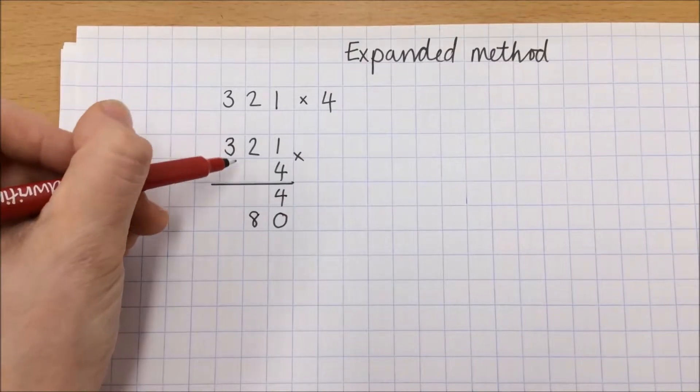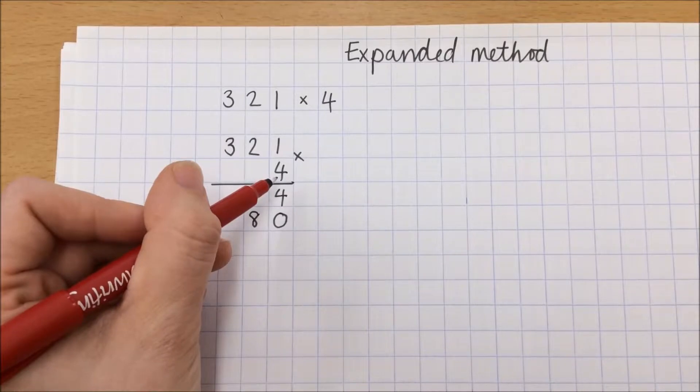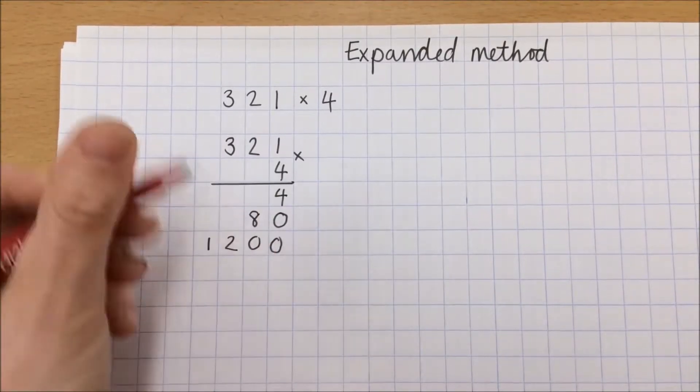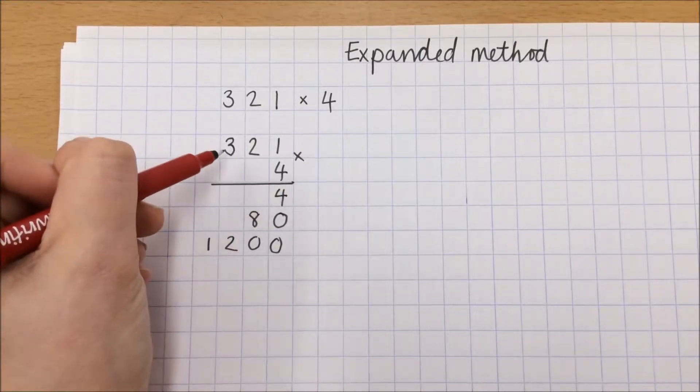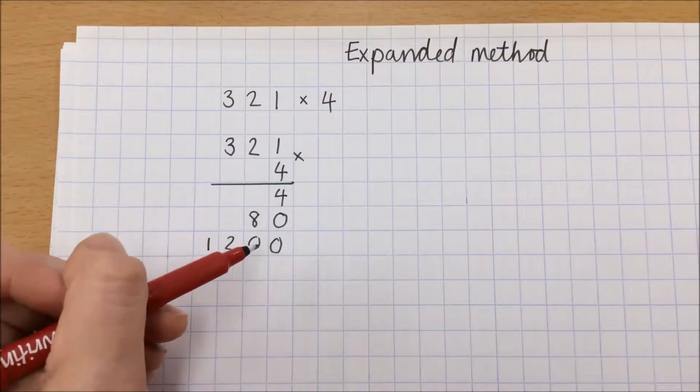Now I'm looking at my hundreds column. 300 multiplied by 4 is 1,200. Some children will be looking at that and saying 3 times by 4, but it's important that they still recognize that it's 1,200, and therefore we need these zeros as placeholders.